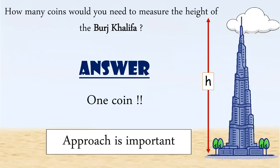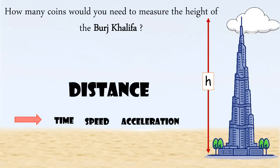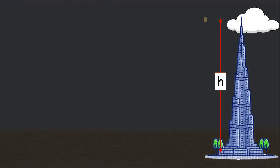But importantly, we have to come up with a proper approach to measure the height. So first, we should get the values of some of these unknown parameters. Well, we can easily get the value of time by dropping the coin from the top of the tower using a stopwatch.